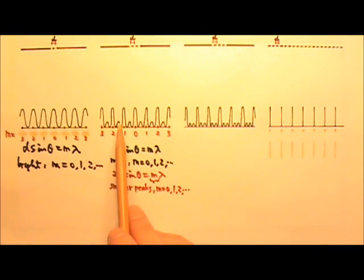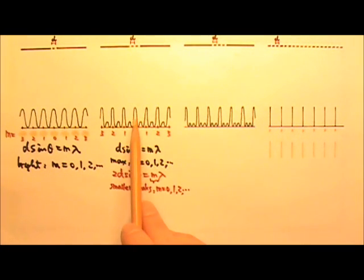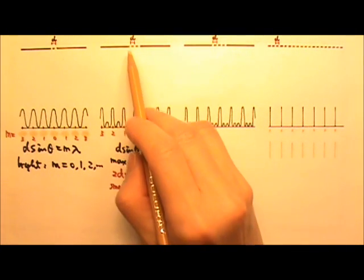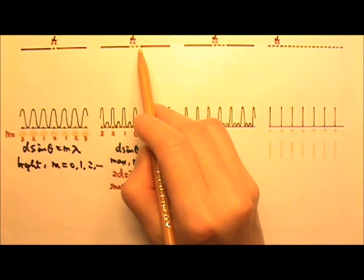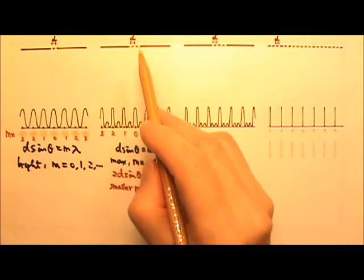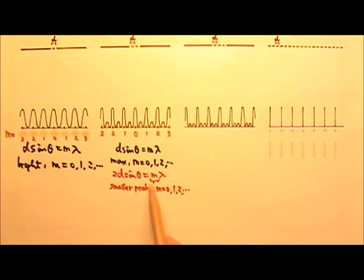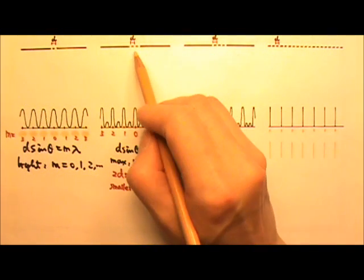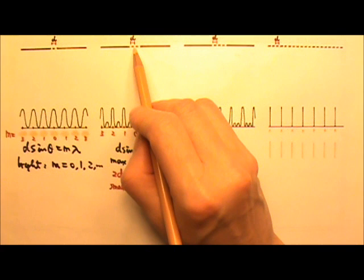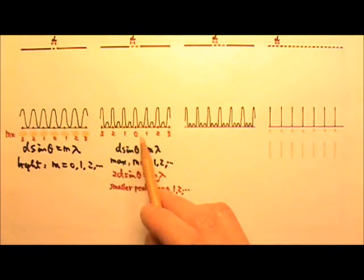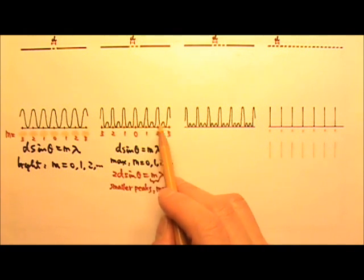We would also see these smaller peaks in between the M equals whole number maximum. Because we can have the wavelets from these two slits be constructive so that 2D sine theta equals whole number M times the wavelength. But of course, in this case, the wavelet from the middle slit would be half a wavelength off and produce destructive interference. That's why these peaks in between are smaller, have lower intensity.